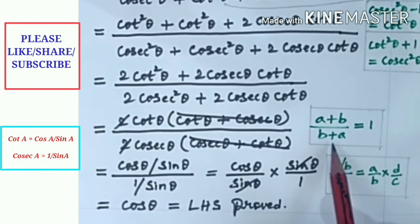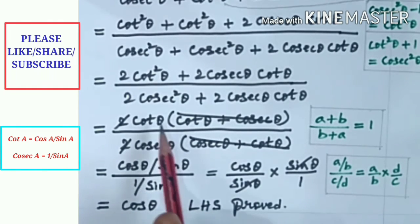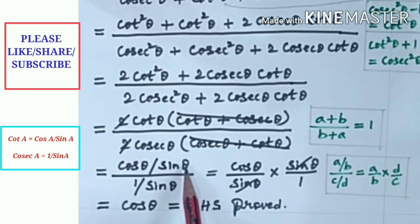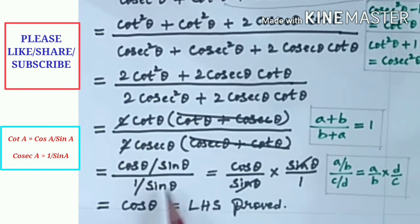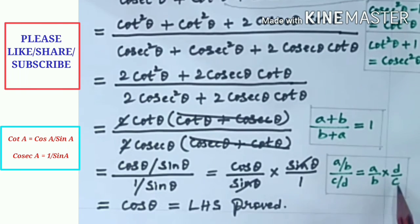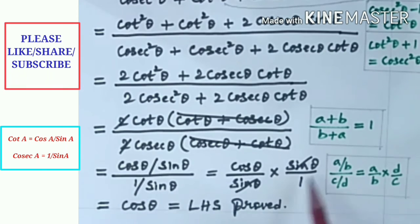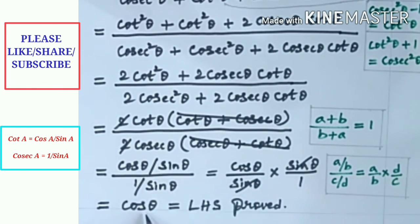We have the form (a × b) / (b × c), so (cot theta plus cosec theta) and (cosec theta plus cot theta) cancel. The 2's cancel as well. This gives cot theta divided by cosec theta, which is cos theta over sin theta divided by 1 over sin theta. In the form (a/b) / (c/d) = (a/b) × (d/c), we get cos theta over sin theta times sin theta over 1. The sin thetas cancel, leaving cos theta, which equals LHS. Proved.